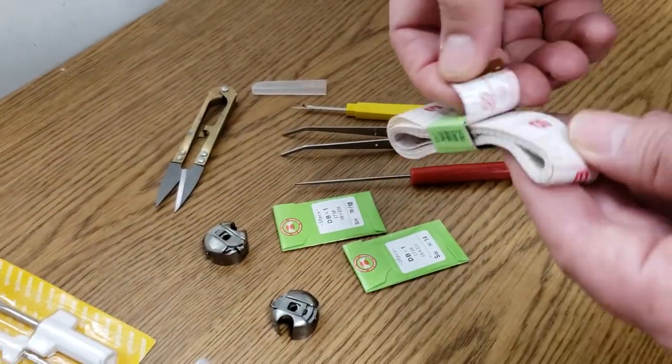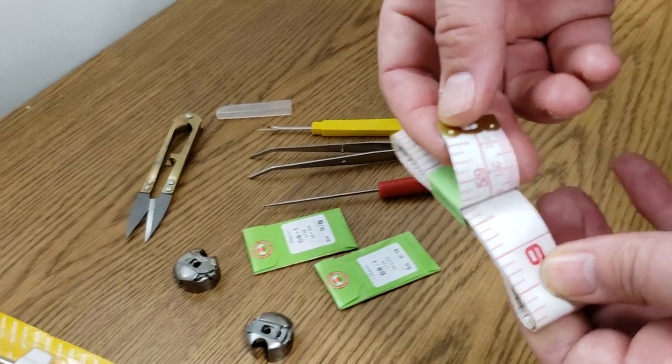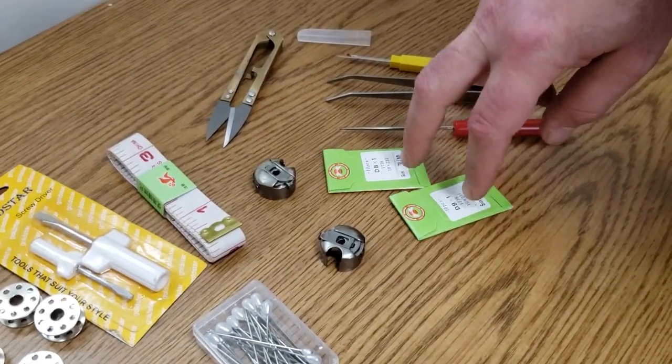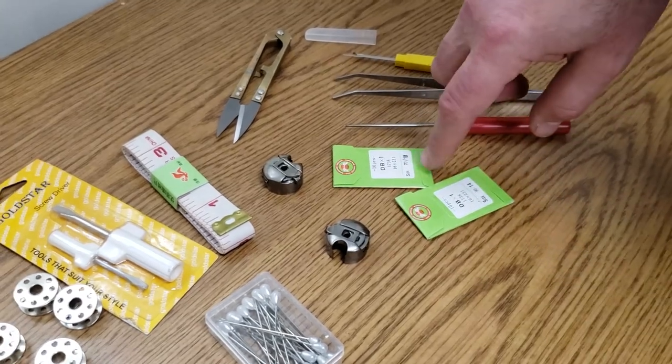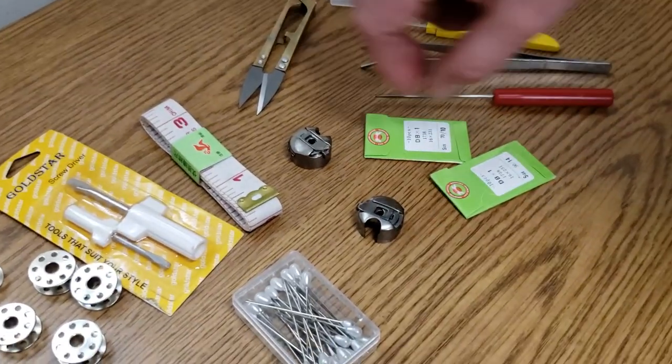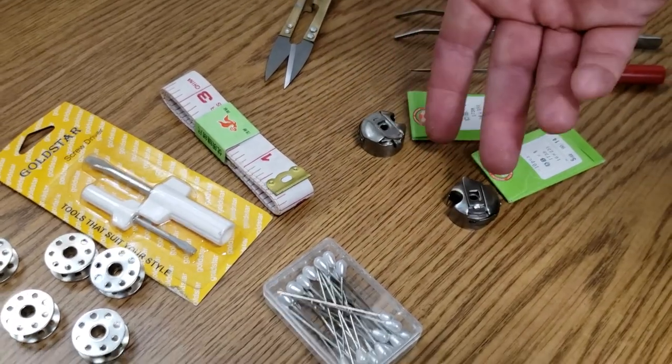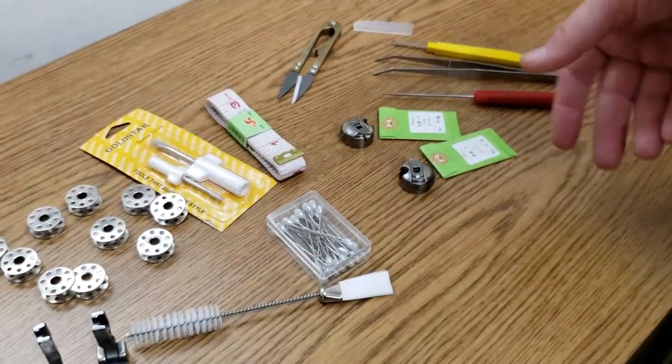60 inch tape measure, double sided centimeter and inch. Two packs of industrial sewing machine needles, 110/114. Two bobbin cases. These bobbin cases out there are about 10 bucks each.